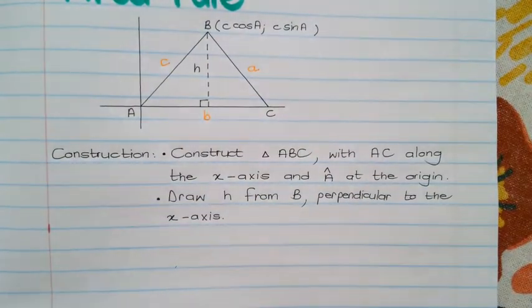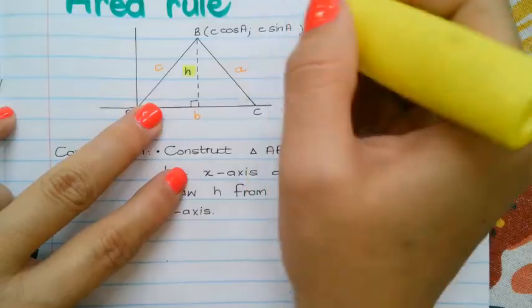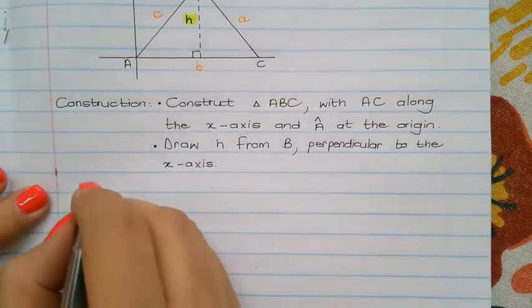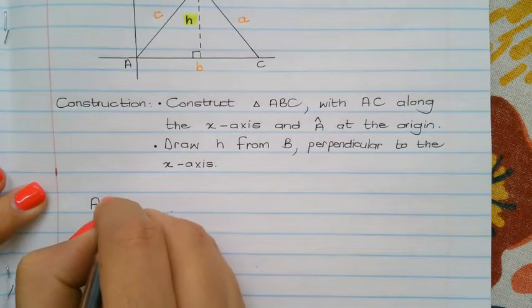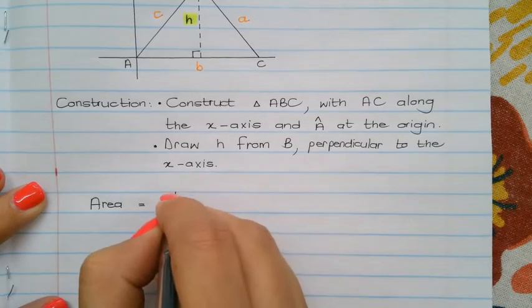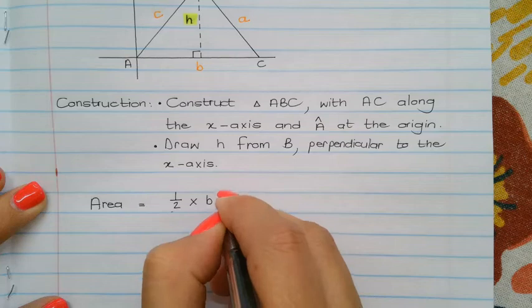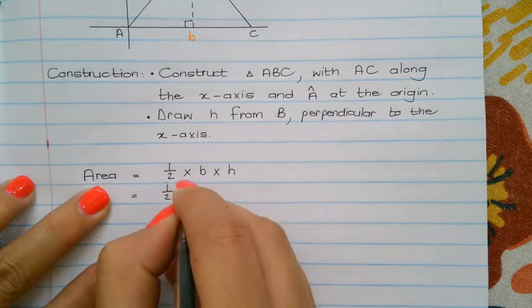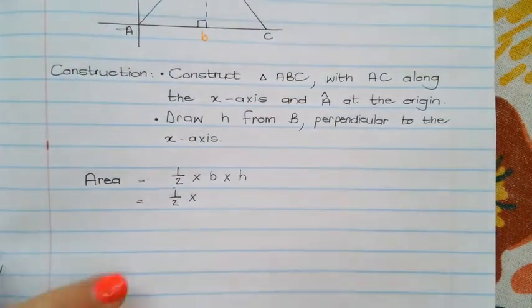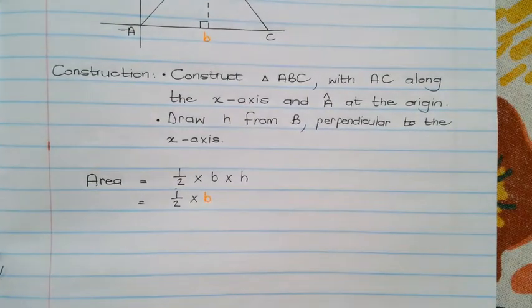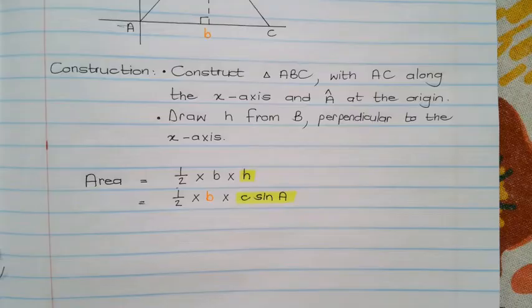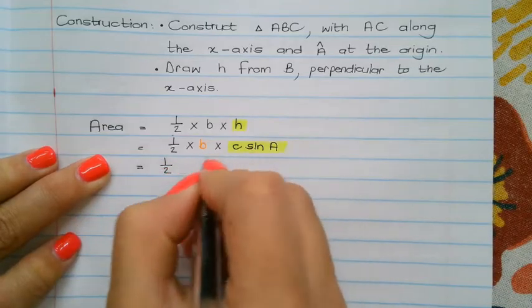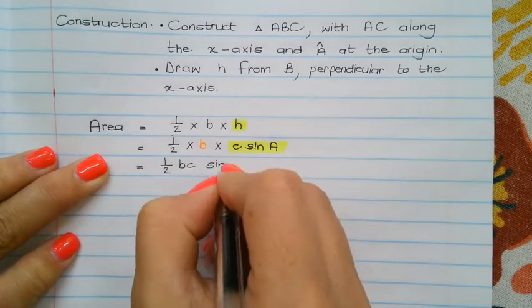Next thing that I would like for you to remember is that this h is c sine angle a. Right, so the area of a triangle that we usually did is half times base times perpendicular height. Okay, so this is then half times the base of the triangle, which is now my orange b, times, so I'm substituting the values, and then that is the area rule. So I have half, b, c, sine angle a.